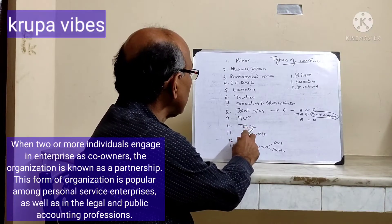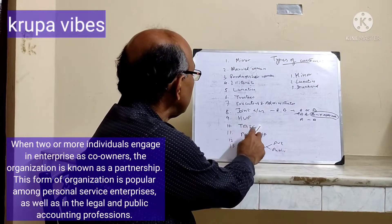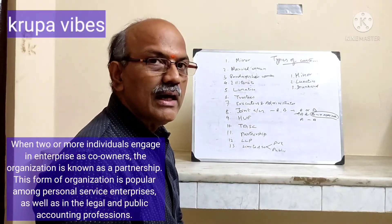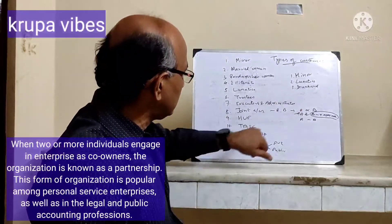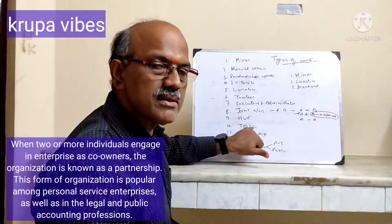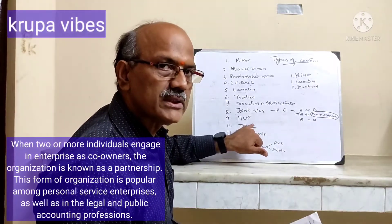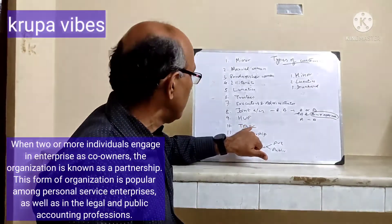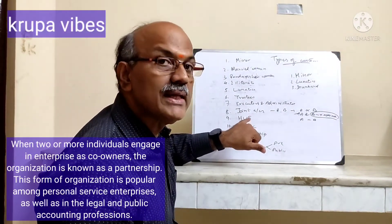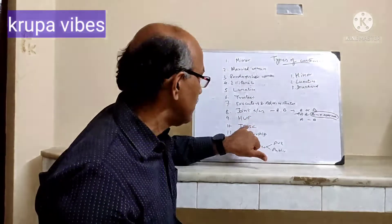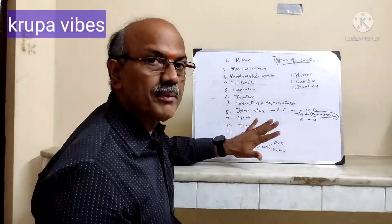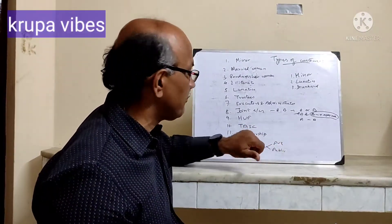Trust, association, society, and club accounts are governed based on their bylaws. Based on the bylaws, the banks will open accounts, and operating instructions will be defined. It can be either savings account or current account, whichever the customer requires depending on the nature of transactions. All documents are obtained accordingly.